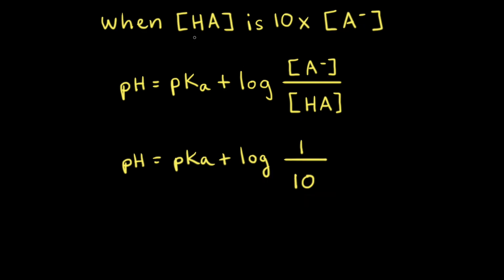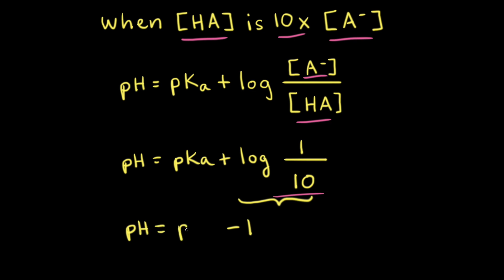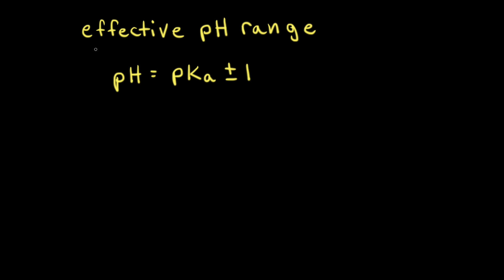Next, let's calculate the pH of the buffer solution when the concentration of weak acid is 10 times the concentration of the conjugate base. Looking at the Henderson-Hasselbalch equation, if the concentration of HA is 10 times the concentration of A-, the ratio is equal to 1 over 10, and the log of 1 over 10 is equal to negative 1. Therefore, the pH of the buffer solution is equal to the pKa value of the weak acid minus 1. This value for the pH represents the lower limit of the effective pH range. By the calculations we've just done, we've seen that the effective pH range of a buffer is plus or minus 1 of the pKa value of the weak acid.